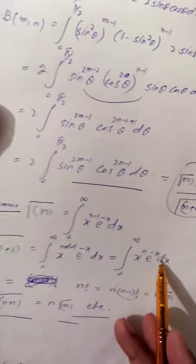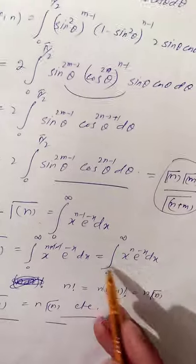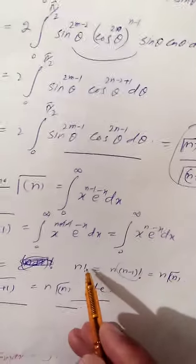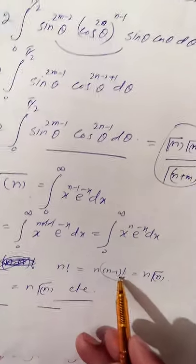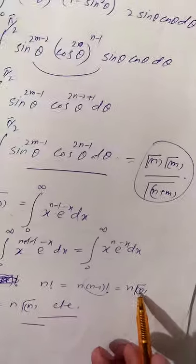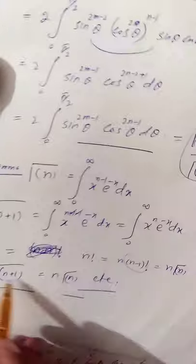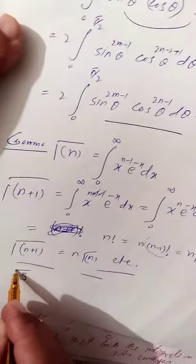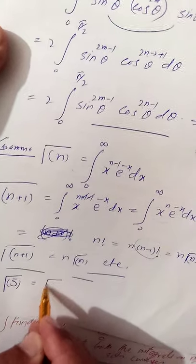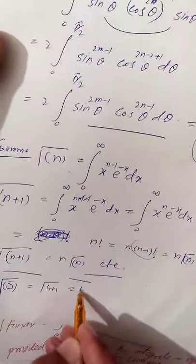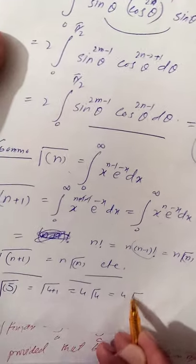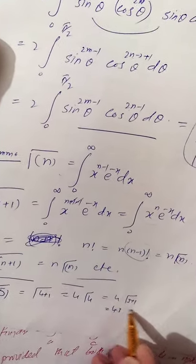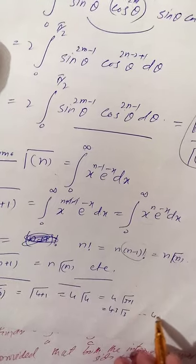By the reduction formula, Γ(n+1) = n·Γ(n), which means Γ(n+1) = n!. Furthermore, n! = n·(n−1)! and (n−1)! = Γ(n), so Γ(n+1) = n·Γ(n). For example, Γ(5) = Γ(4+1) = 4·Γ(4) = 4·3·Γ(3) = 4·3·2·Γ(2), continuing until we evaluate 4! = 24.